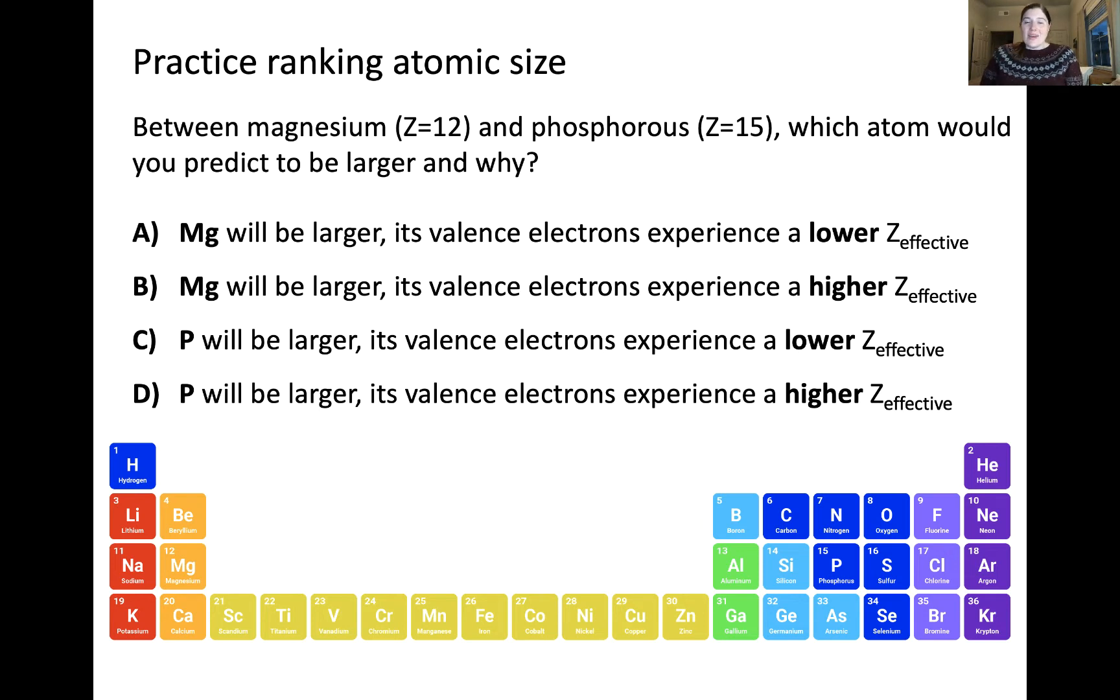So when considering a single row of main group elements of the periodic table, shielding is effectively constant. If we look at the electron configurations for magnesium and phosphorus, you'll notice that both have neon as their noble gas core, which is a core of 10 electrons. So the valence electrons are being collectively shielded in both magnesium and phosphorus by those 10 electrons. So the nucleus of magnesium contains 12 protons and there are two valence electrons that are being shielded by these 10 inner electrons. So to calculate the effective nuclear charge, we would take the nuclear charge of magnesium plus 12 and subtract those 10 shielding inner electrons for a total effective nuclear charge of plus 2.